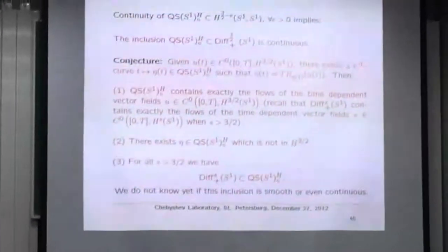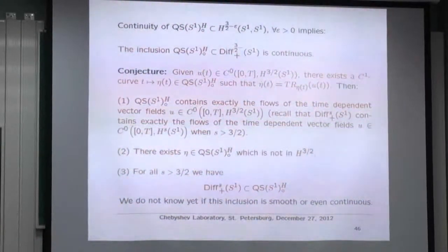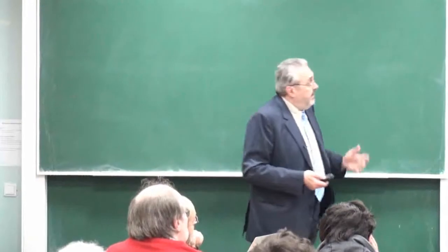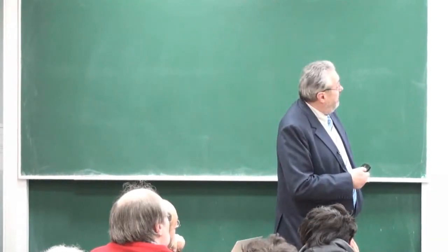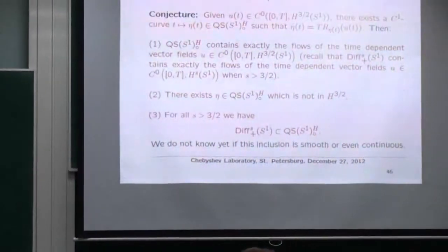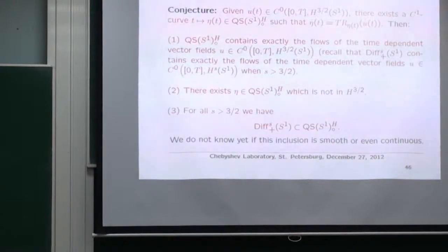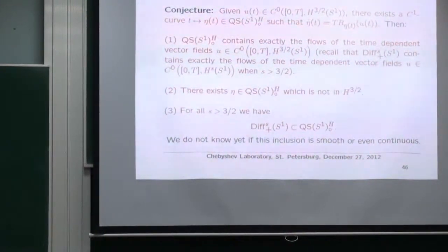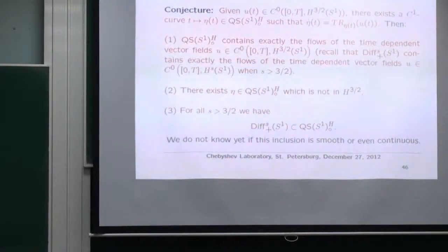We know where the quasi-symmetric homeomorphisms sit — it's the Teichmüller space — but this is not concrete: I can't put my hands on it and verify things with estimates. Here is a conjecture which we haven't been able to prove: given u(t) in C⁰, there exists a C¹ curve η(t) such that η̇ = u(t)∘η(t). On religious grounds it better be true — it's the exponential map of a group! But you need to prove something and it doesn't work. If it is true, this contains exactly the flows of time-dependent vector fields in ZS.